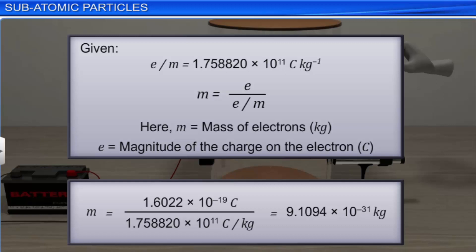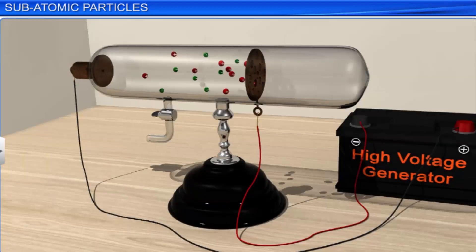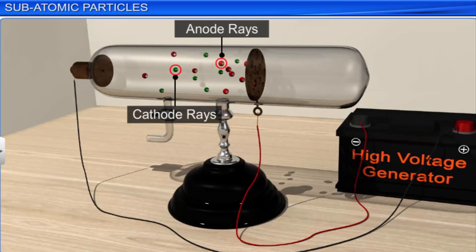The mass of the electron was then determined by combining the results of Millikan's oil drop experiment and Thomson's value of e/m ratio and was found to be 9.1094 × 10^-31 kg. Just like the discovery of cathode rays led to the discovery of negative particles called electrons, the discovery of anode rays led to the discovery of positive particles called protons.